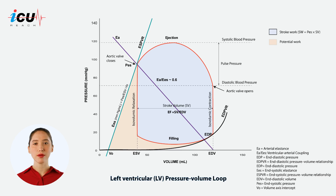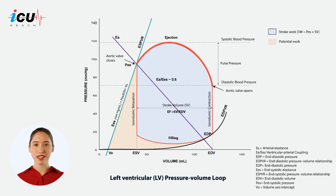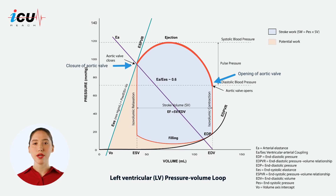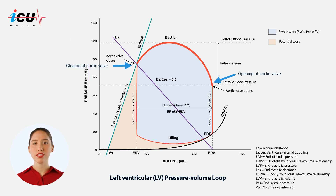Following isovolumetric contraction is the ventricular ejection phase. This phase starts with the opening of the aortic valve and ends with its closure. The volume of the ventricle decreases as blood is ejected into the aorta, with the pressure initially rising to a peak before beginning to decrease. This phase forms the top curved part of the loop, moving from right to left.